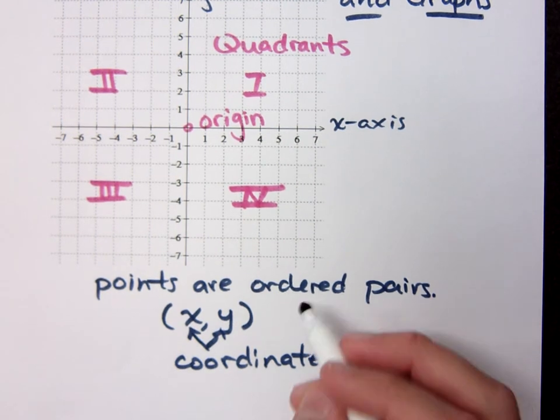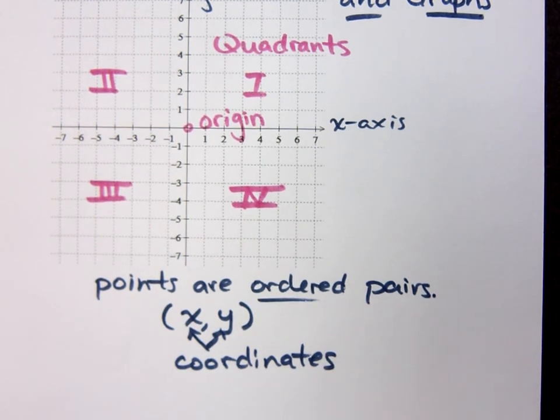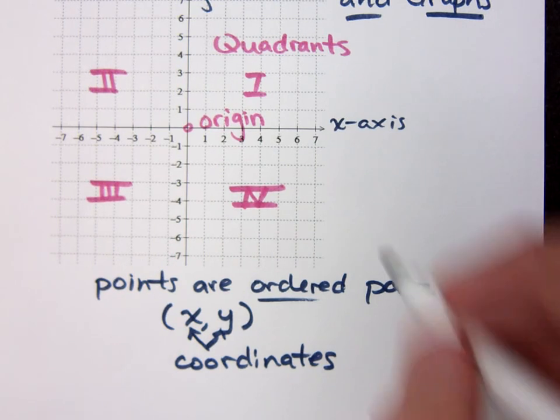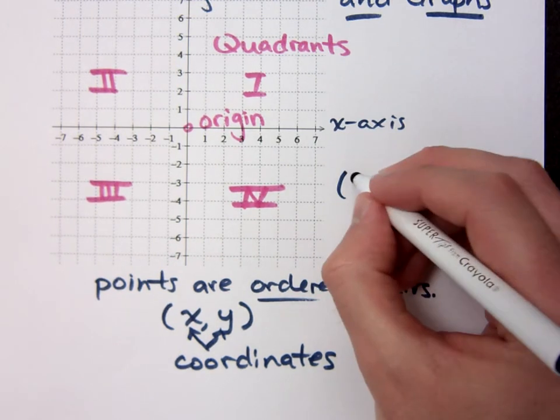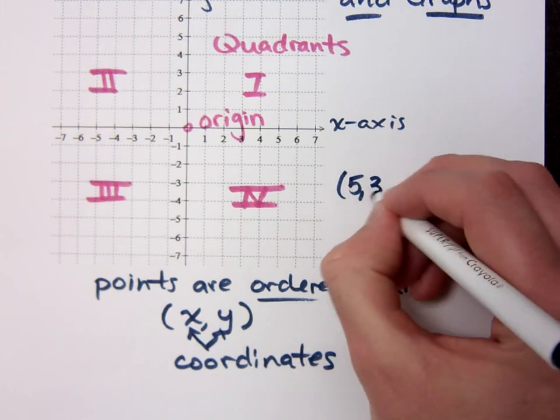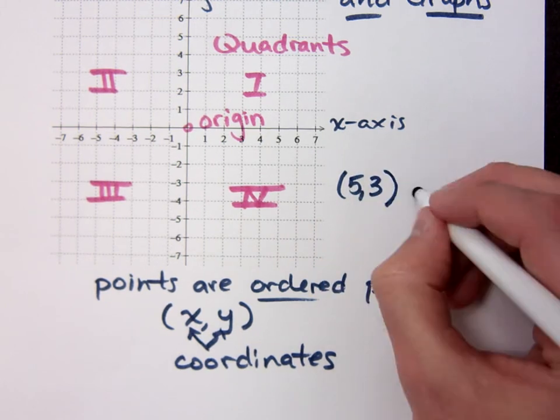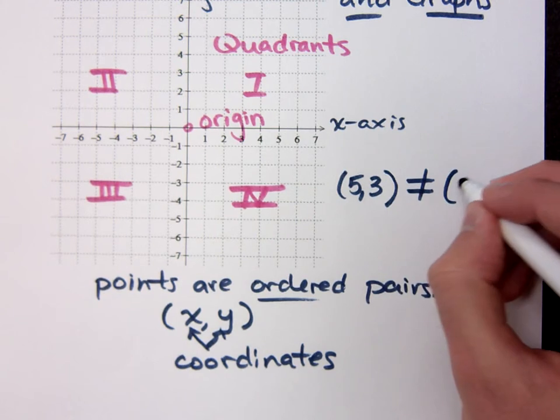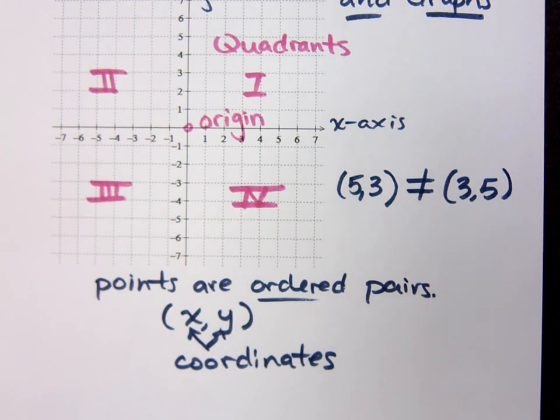And I hope you guys remember that since there's order here, the order does matter. It's very important to us. That means if I were to say the ordered pair (5,3), this is not the same as the ordered pair (3,5).